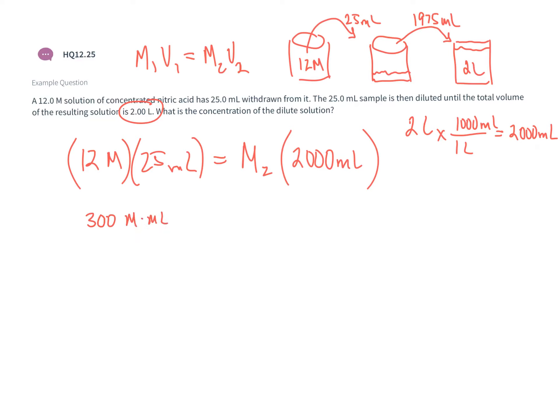So 300 molarity times milliliters equals the molarity of my unknown solution times 2000 milliliters. Dividing both sides by 2000 milliliters, the milliliters cancel out.